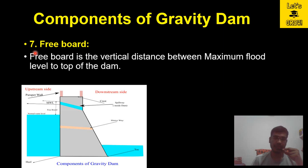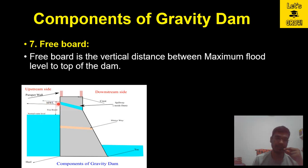The seventh component is freeboard. Freeboard is the vertical distance between the maximum flood level and the top of the dam. Here you can see the freeboard, which is the distance between the normal water level and the maximum reservoir level.